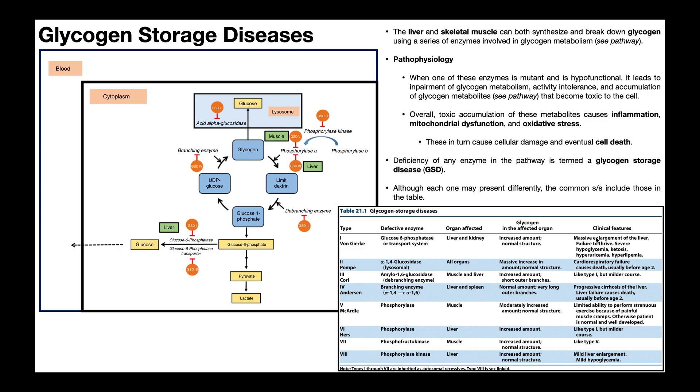In type 1 GSD, what you'll typically see is massive enlargement of the liver, failure to thrive, severe hypoglycemia, ketosis, hyperuricemia, hyperlipidemia. So one of the more severe manifestations of GSD.